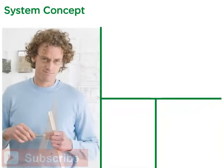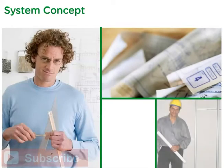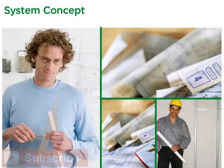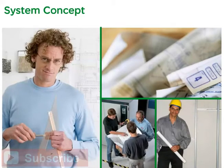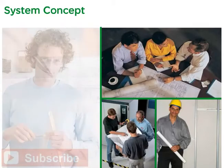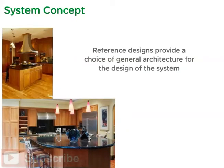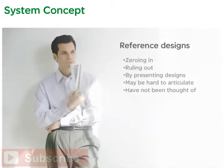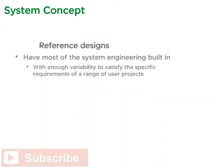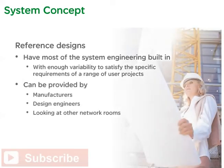Given the IT parameters of criticality, capacity, and growth plan, the physical infrastructure systems within the wiring closets could be designed in dozens of different ways. However, a much smaller number of practical designs actually exists. A library of these optimal designs can be used to quickly narrow down the possibilities. Much like a catalog of kitchen designs at a home improvement store, reference designs provide a choice of general architecture. They can help in zeroing in or ruling out possibilities, and have most of the system engineering built in with enough variability to satisfy a range of user projects. Reference designs can be provided by manufacturers, design engineers, or simply by looking at other network rooms recently built.